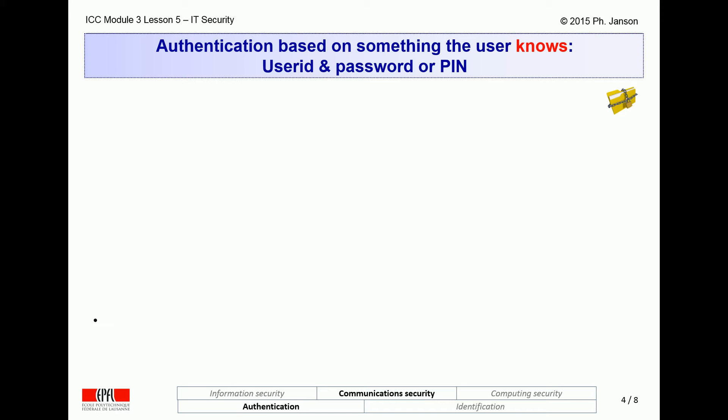Let us first talk about secrets that users know: PINs or passwords. In passing, let us point out that all the things we will say here about passwords apply equally well to user IDs. Many people argue that user IDs are not secret — our EPFL user IDs are our firstname.lastname.epfl.ch, which is indeed not a secret. However, this is unfortunate, as it allows anyone who knows we are affiliated with EPFL to guess our user ID, send us spam, blackmail us, or try to steal our identity. User IDs should therefore also be kept as secret as possible, even though they are not really as secret as passwords.